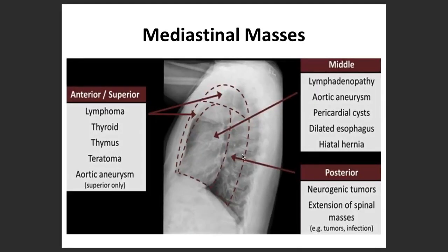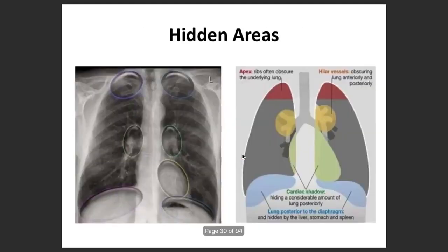You may notice different masses in the superior, posterior, or middle regions. In the superior region, you see cases of thyroid, thymus, lymphomas, and teratomas. In the middle region: bronchogenic cysts, lymphadenopathy, aortic aneurysm, pericardial cysts, dilated esophagus, or hiatus hernia. In the posterior region, you see neurogenic tumors or spinal masses.